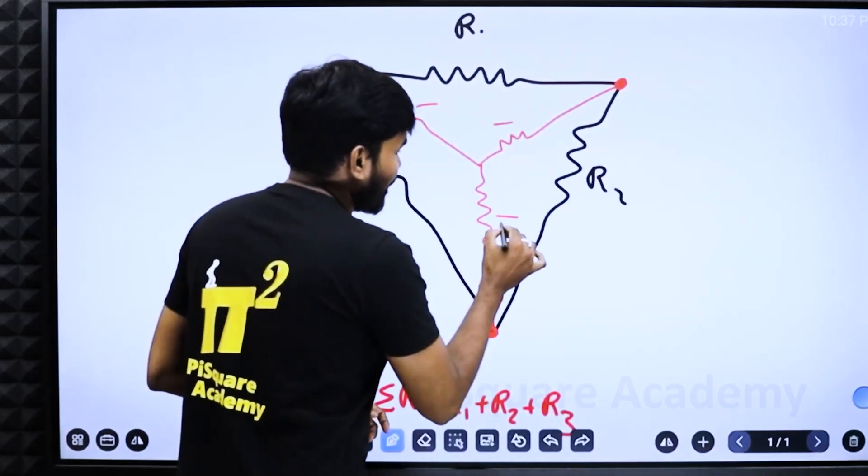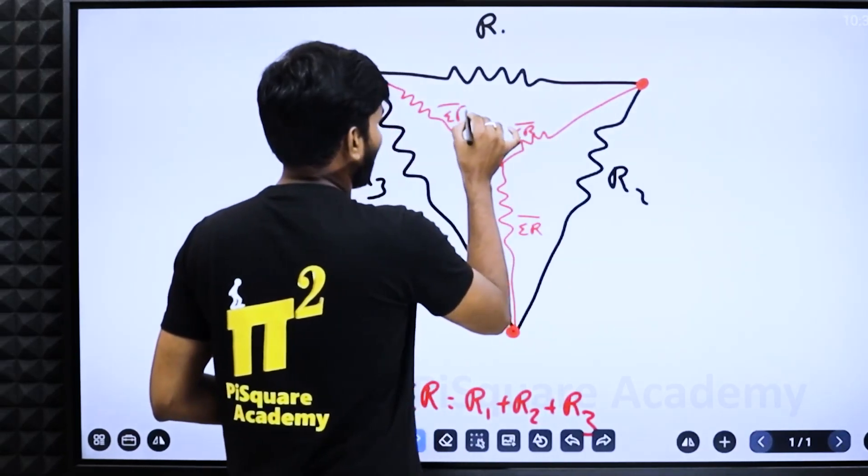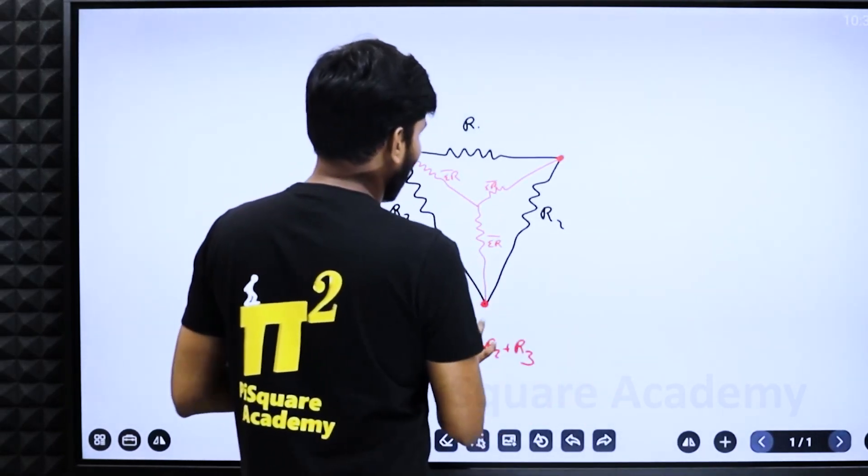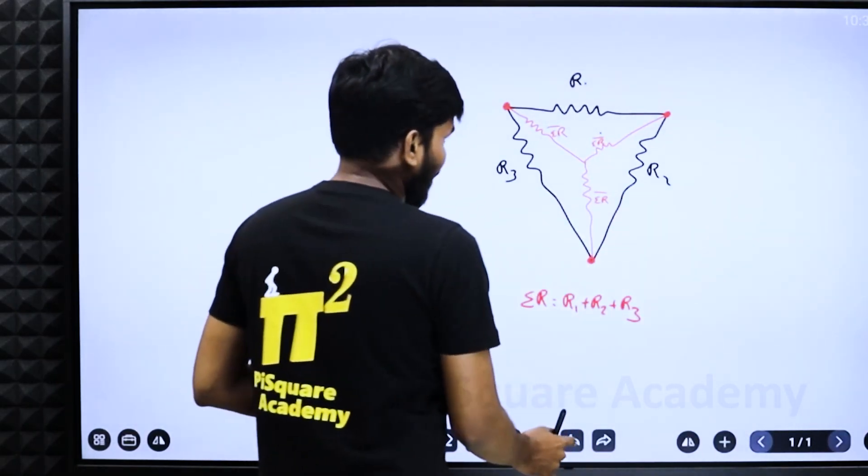Now in the denominator, you keep sigma R. Sigma R in the denominator. What is the sigma R value you have here? That sigma R in the denominator.